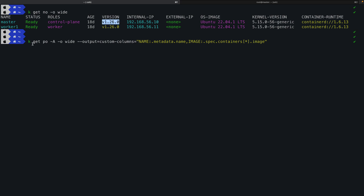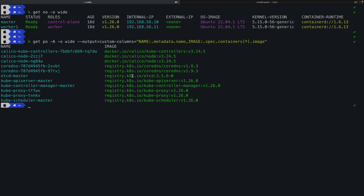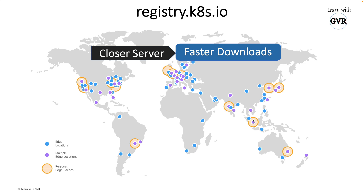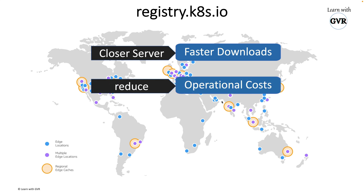In Kubernetes 1.26, running kubectl get pod and checking the image name shows registry.k8s.io. In my Vagrant cluster installed on Mac, these images are being pulled from the nearest edge location. The closer the server, the faster the download. Another benefit is reduced operational cost — if images are pulled from far away there is huge network cost, and this new registry helps reduce that.